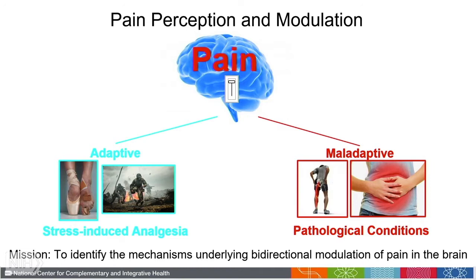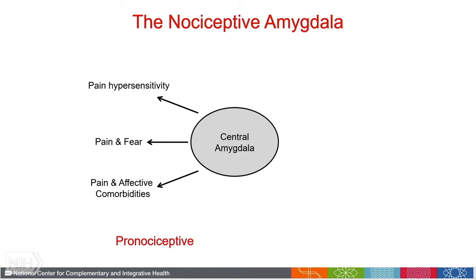The main mission of my lab is to understand the mechanisms that underlie this bidirectional modulation of pain in the brain. We have focused our work on the central amygdala, which is a limbic brain structure that has received a lot of attention in about the last 10 to 15 years as a site that promotes pain.